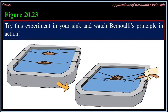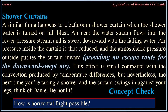Figure 20.23: Try this experiment in your sink and watch Bernoulli's principle in action. A similar thing happens to a bathroom shower curtain — when the shower water is turned on full blast, air near the water stream flows into the lower pressure stream and is swept downward with the falling water. Air pressure inside the curtain is reduced, and the atmospheric pressure outside pushes the curtain inward, providing an escape route for the downward-swept air. This effect is small compared with convection produced by temperature differences, but the next time the curtain swings in against your legs, think of Daniel Bernoulli.